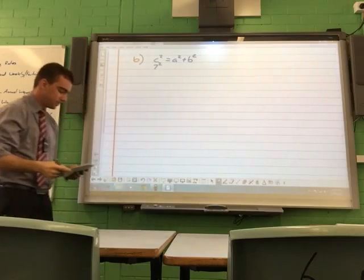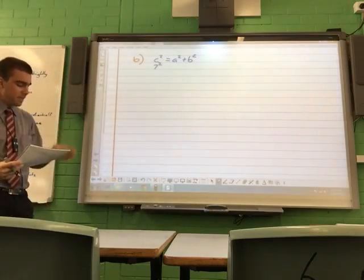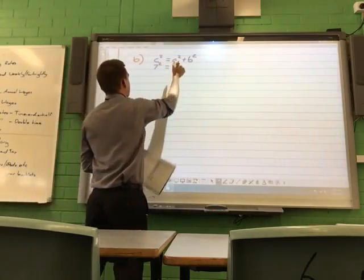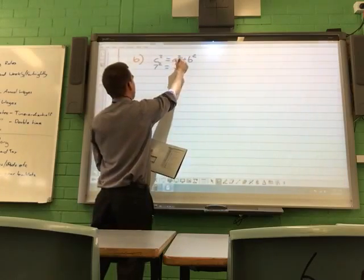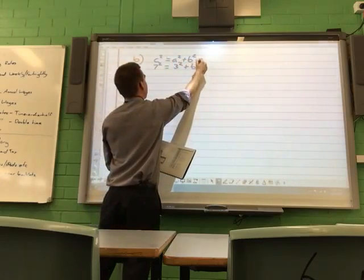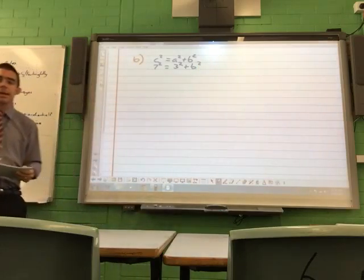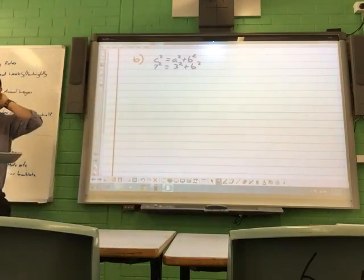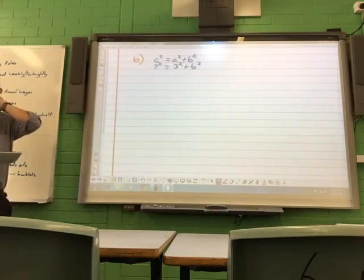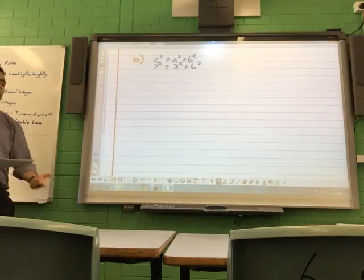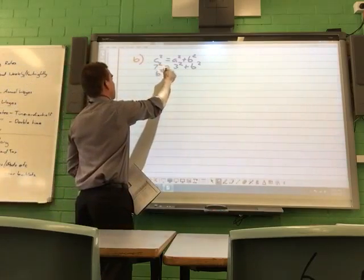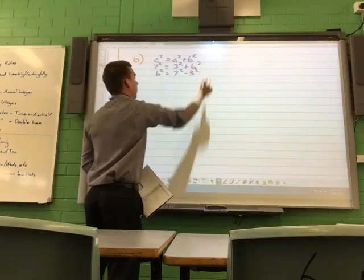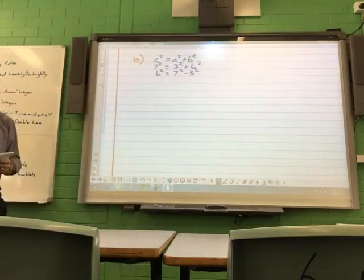So the length of the hypotenuse is 7. We're going to make it 7 squared equal to, it doesn't matter which order, we're going to do 3 squared plus b squared. Okay? Or in other words, you can learn it as you do the hypotenuse squared and take away the length of the other shorter side squared. That means b squared is going to be 7 squared, take away 3 squared. Okay?